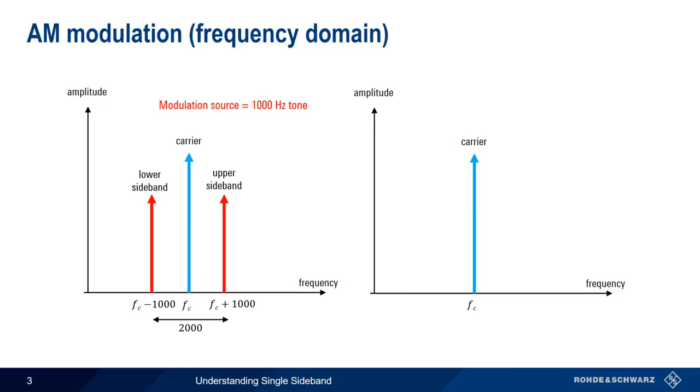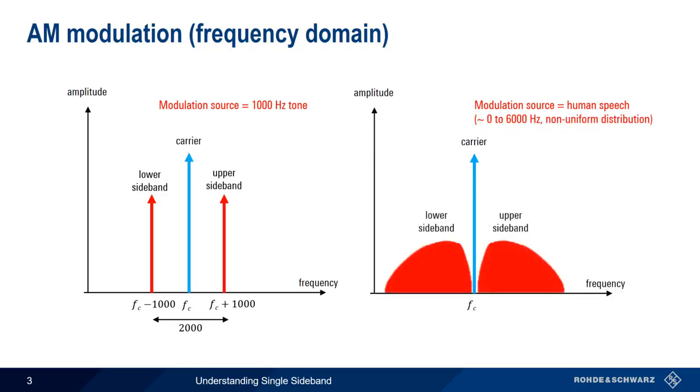Human speech, on the other hand, contains very broad and non-uniform spectral content. So if we use human speech as our modulation source, our upper and lower sidebands will also be broad and non-uniform, and the total width of our AM modulated signal will be twice the width of the highest modulating frequency. Note that the information contained in the upper and lower sidebands is identical.